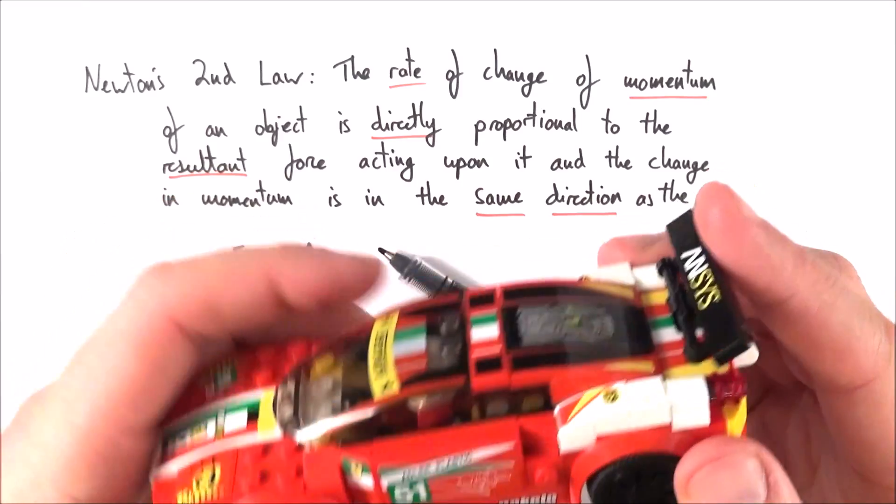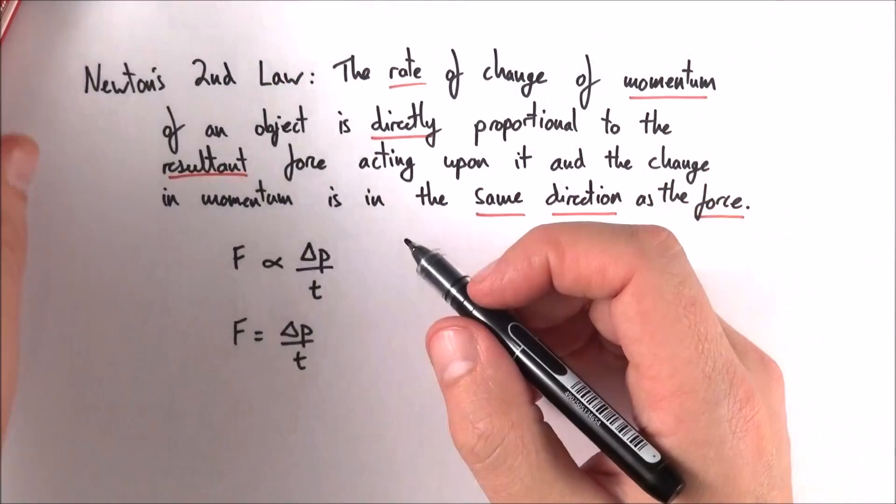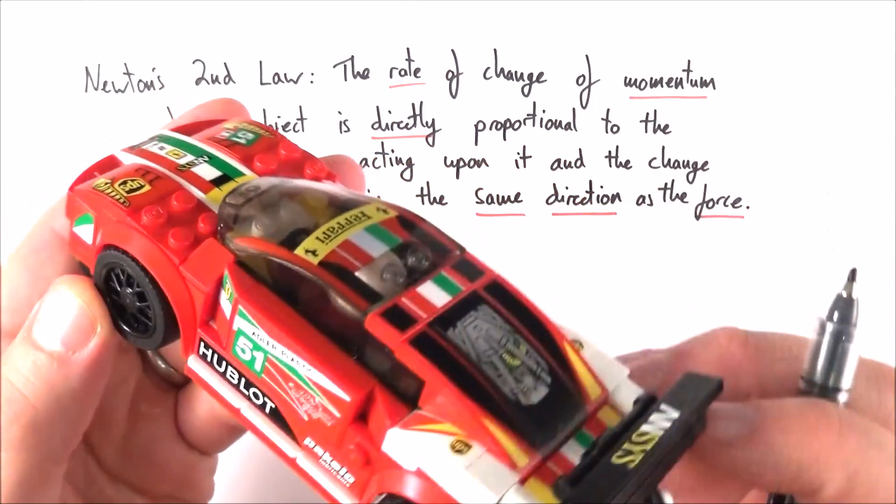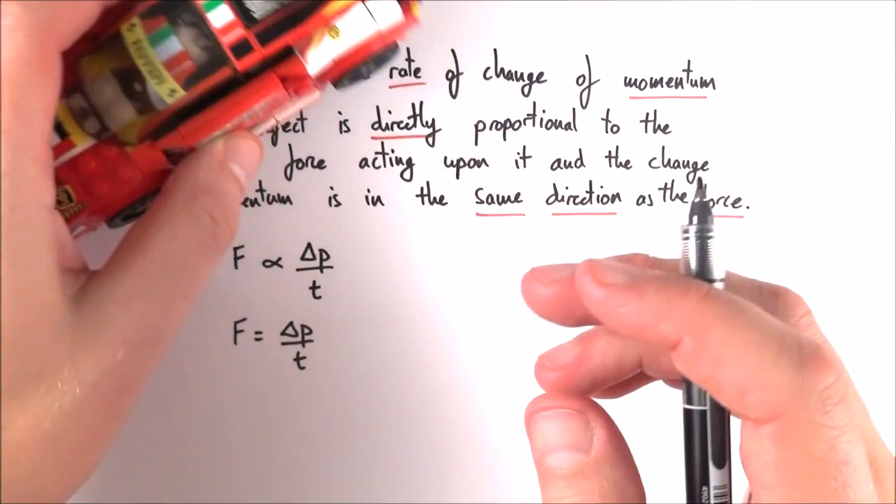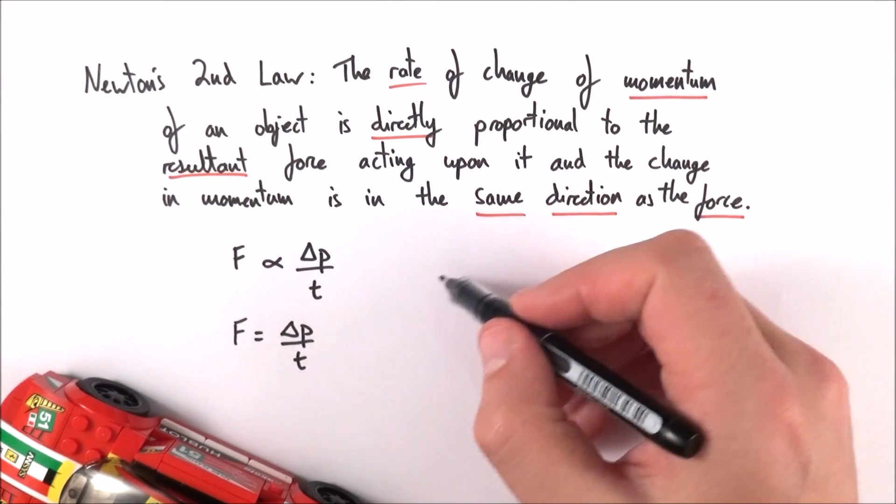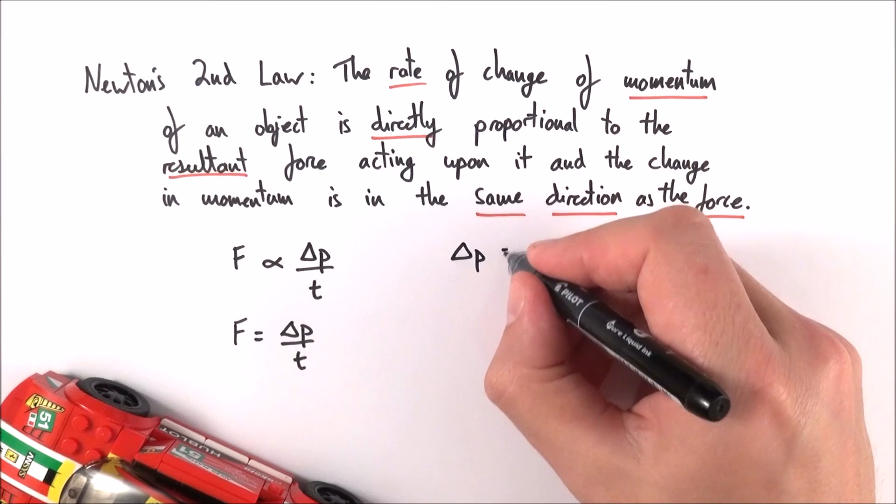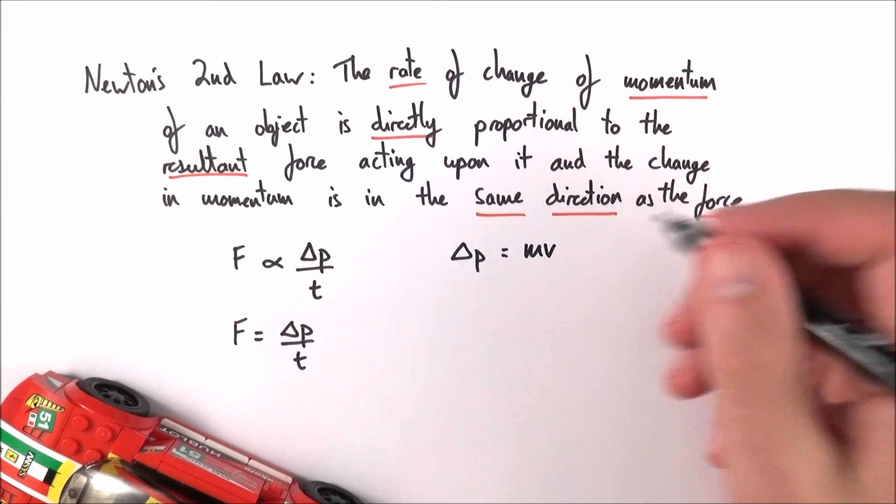But let's now think about something like this car, where the mass does not change and there's maybe some kind of uniform acceleration. What we can say is that the change in momentum delta P is going to be equal to the final momentum, which is MV, minus the initial momentum, which is MU.